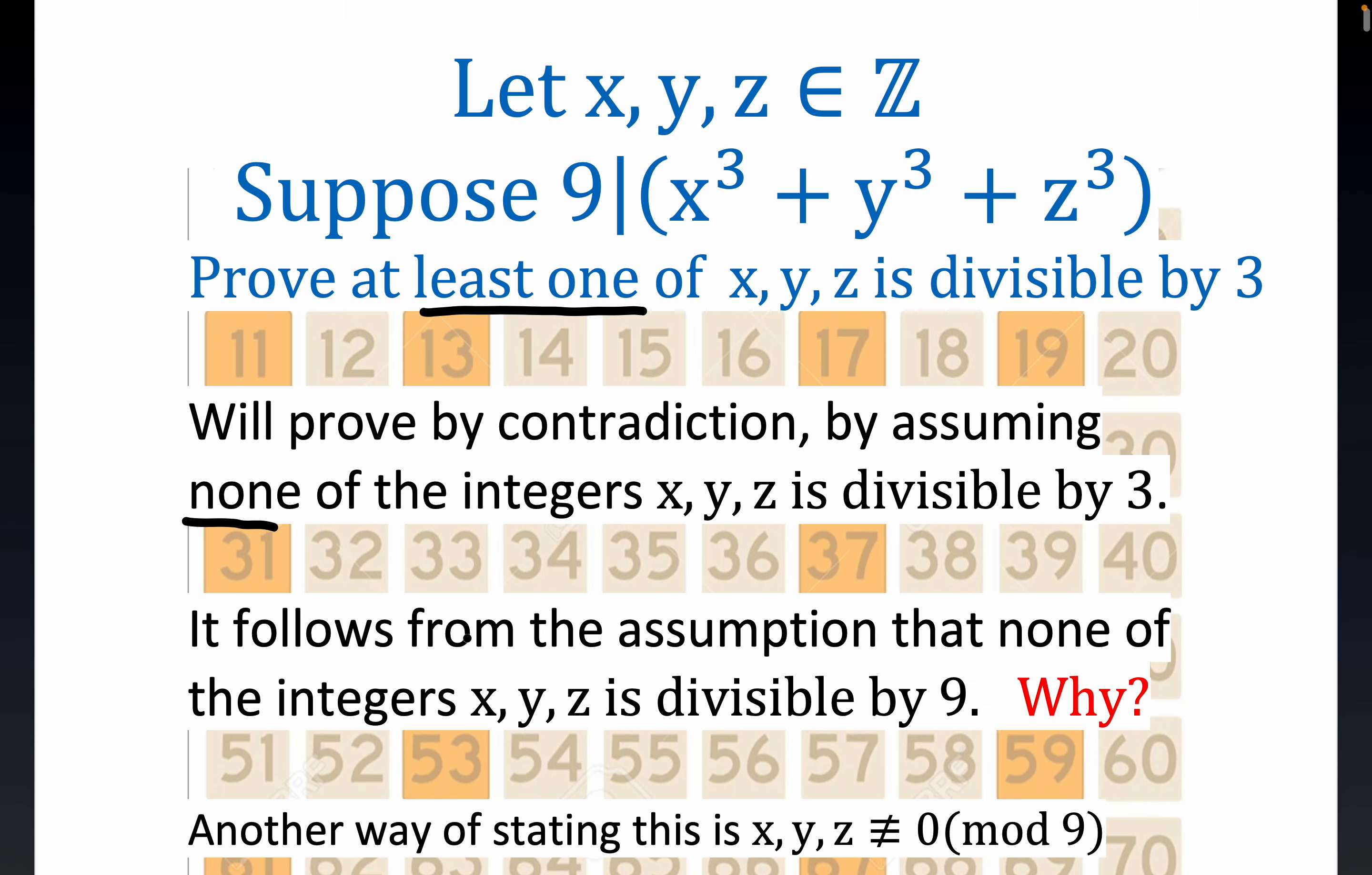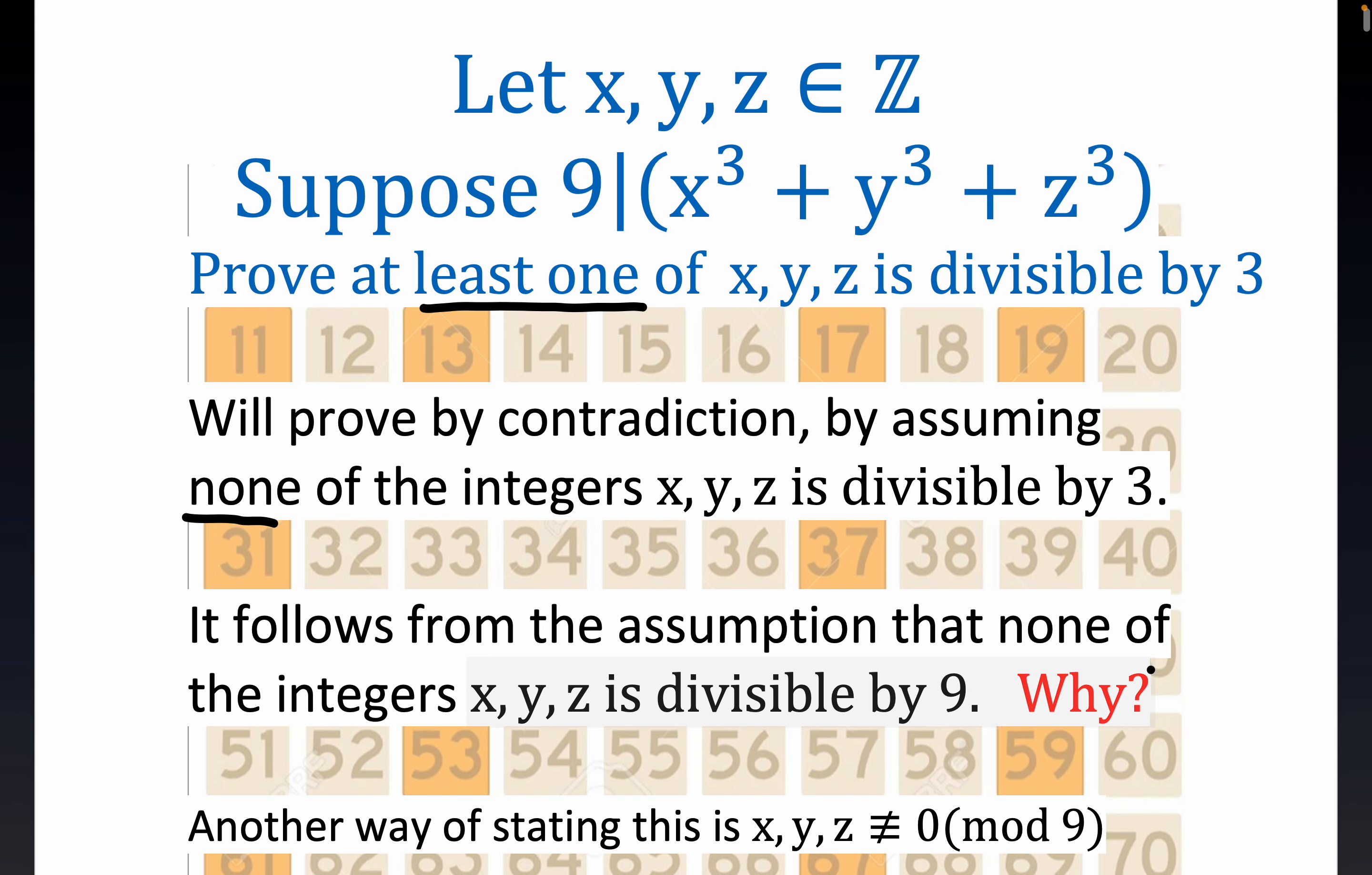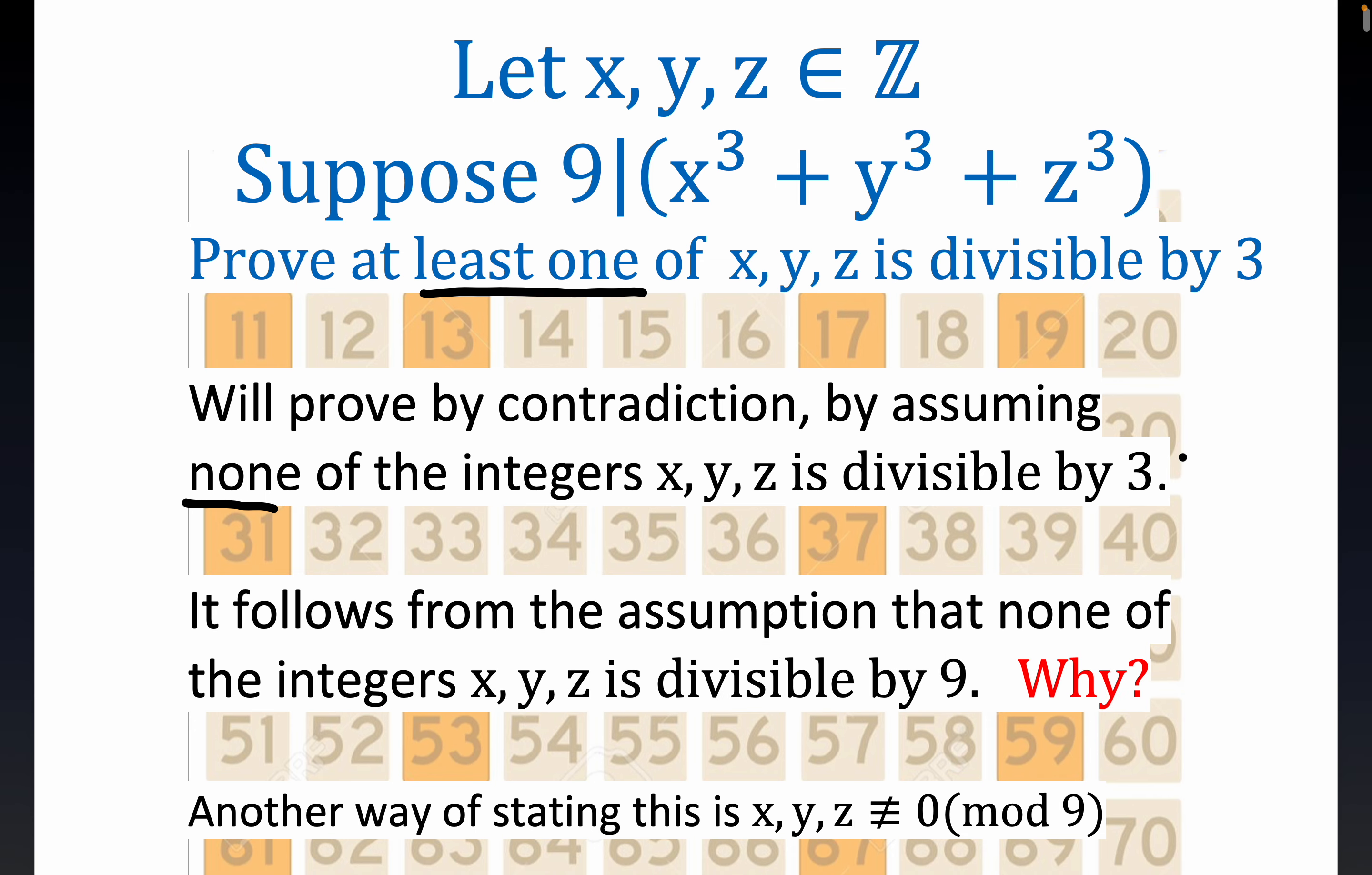So it follows from the assumption that none of the integers is divisible by 9, and that's crystal clear, right? Because if they're not divisible by 3, they can't be divisible by 9, because 3 is a divisor of 9. And divisibility is what they call transitive. So this follows immediately from this supposition or assumption.